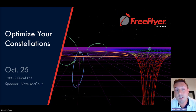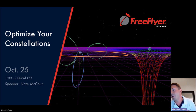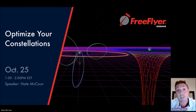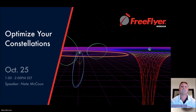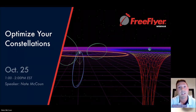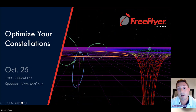Welcome to the AI Solutions Free Flyer Webinar Series: Optimize Your Constellations. We greatly appreciate all of you taking the time to join us from all over the world. My name is Christopher Ulrich, and I am the AI Solutions Space Products Account Executive. I'll be one of your moderators today, joined by Danny Brown, also a Space Products Account Executive, who will be monitoring the Q&A later.